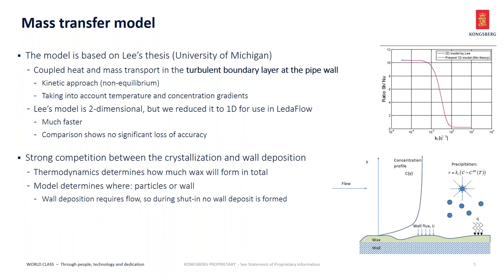The main part of the model is based on the PhD thesis of Lee from the University of Michigan. It is based on the coupled approach for heat and mass transfer in the turbulent boundary layer at the pipe wall. You can see a drawing of this turbulent boundary layer in the bottom right picture — there's a wax layer on the pipe wall shown, and a wall flux of wax deposition combined with heat transfer at the pipe wall. This combination of the wall flux of wax components and heat transfer is important to handle in a coupled manner. This is a kinetic model — not equilibrium based — and it takes into consideration the temperature and concentration gradients.